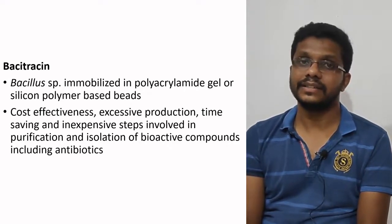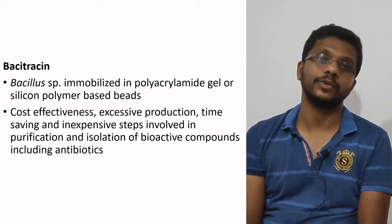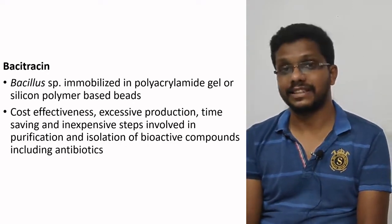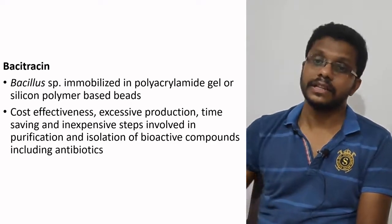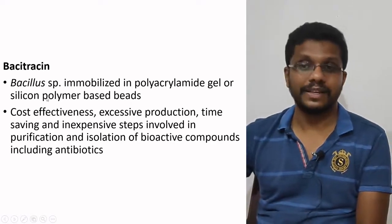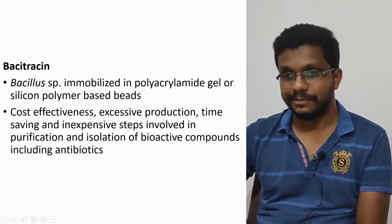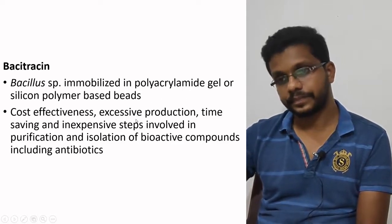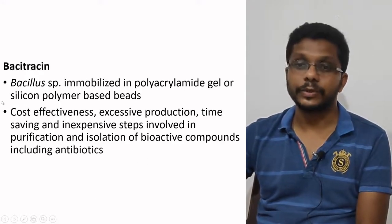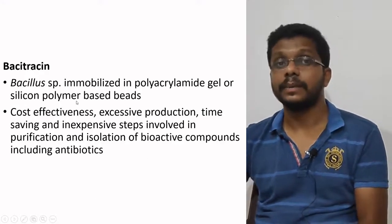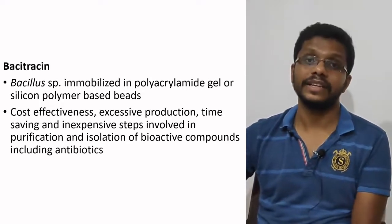During the production period, we don't have to worry about nutritional characteristics, aeration, or agitation because the cells are immobilized. The production of bacitracin using immobilized cells is cost-effective, allows for excessive production, is time-saving, inexpensive, and purification and isolation are easy. Due to these advantages, we prefer immobilized enzymes and cells over the fermentation process.